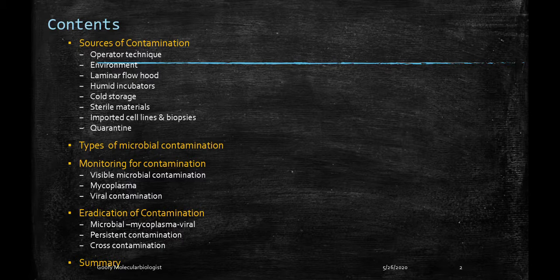The contents of this class include sources of contamination from different sources like operator, environment, laminar flow, humid incubator, and so on. We will also cover types of microbial contamination, monitoring of contamination — all three different types: microbial, mycoplasma, and viral contamination — eradication of contamination, persistent contamination, cross-contamination, and a final summary.